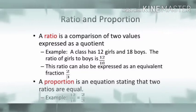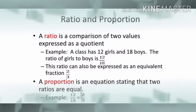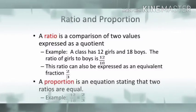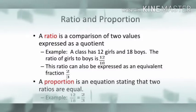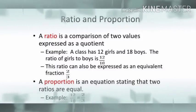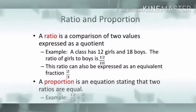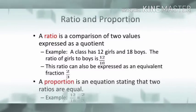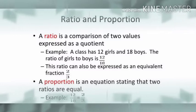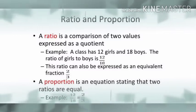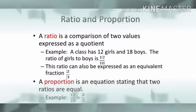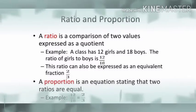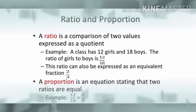Suppose in a class there are 12 girls and 18 boys. The ratio of girls to boys will be 12 divided by 18. Reducing this to its lowest form gives 2 divided by 3, so the ratio of girls to boys is 2:3. Proportion is the equation stating that two ratios are equal — for example, 12/18 = 2/3. These are equivalent fractions, and this relationship is known as proportion.